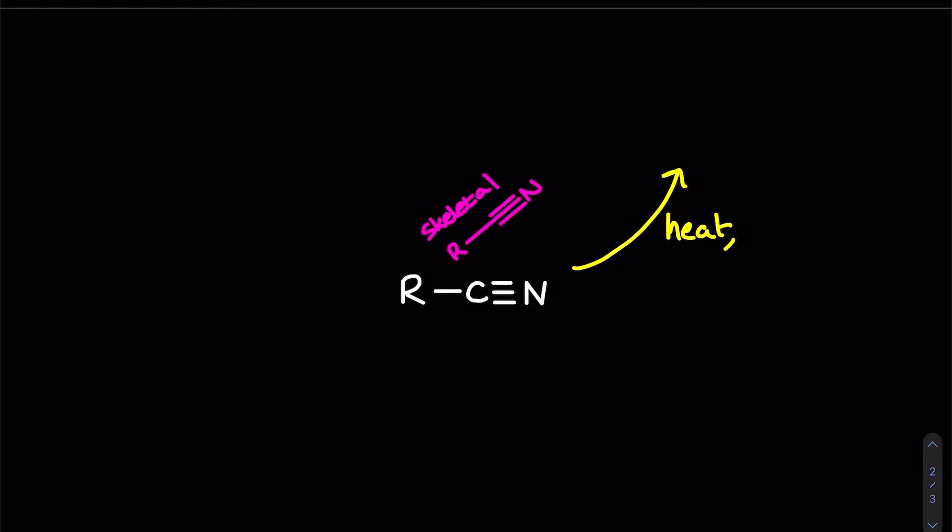In module 6 of the OCR-A specification we have two very important reactions of the nitrile functional group. First off with some dilute HCl and some heat we can convert this nitrile functional group into a carboxylic acid and this is referred to as an acid hydrolysis reaction. The carbon that was originally triple bonded to the nitrogen is now the same carbon which is double bonded to an oxygen and single bonded to an OH group.